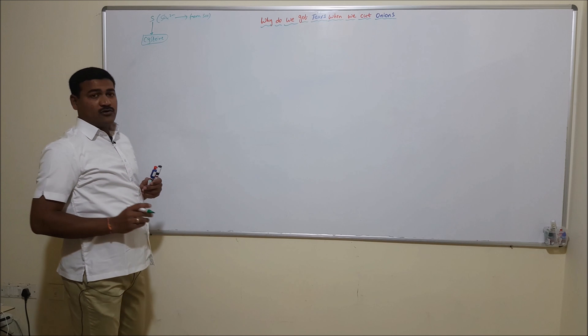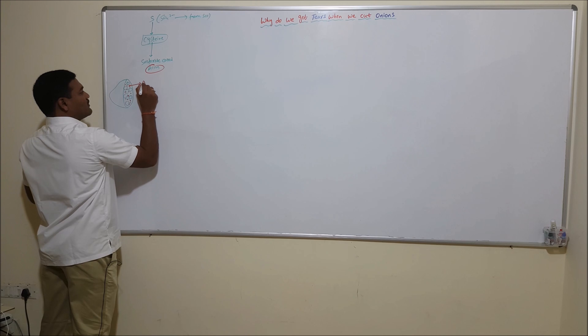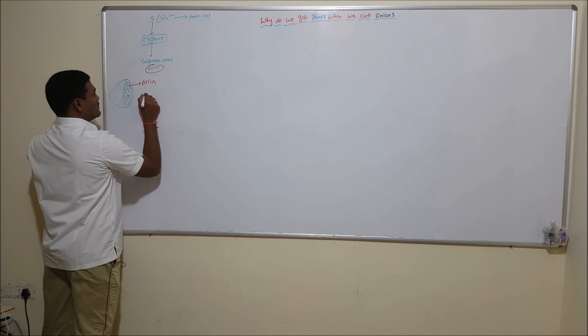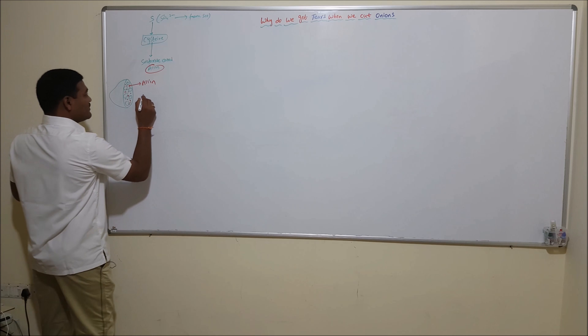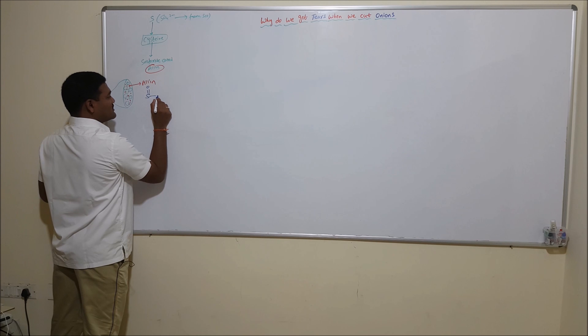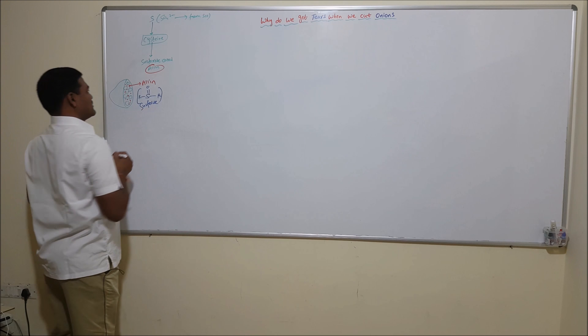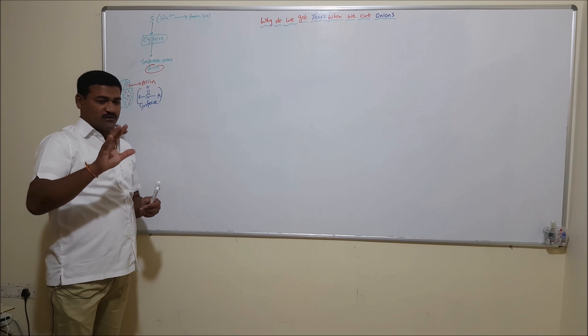Onion plants use sulfur to make an amino acid called cysteine, and this cysteine is used to make a sulfoxide compound called alliin — also referred to as LM — which accumulates between the onion cells. For example, in the onion bulb, within the onion cells, this LM compound gets accumulated between the cells.